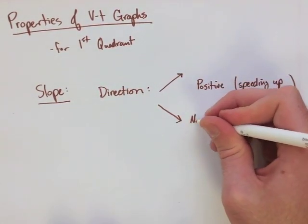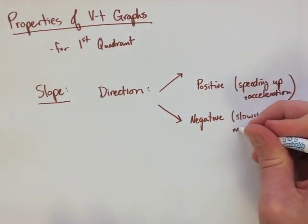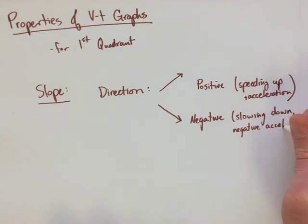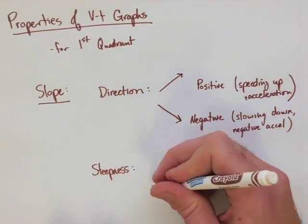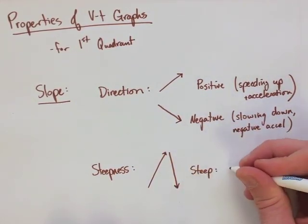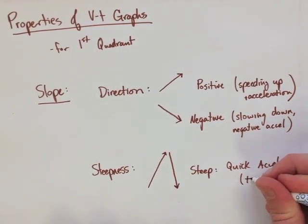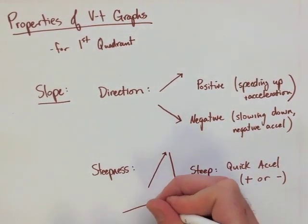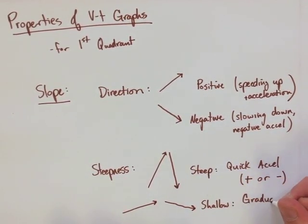If the direction of the slope is negative, that means that we're slowing down, or we have a negative acceleration. Notice we always say acceleration. Now the steepness of the graph, if it's very steep, this means that we're slowing down or speeding up very quickly. We have a quick acceleration. Now if it's very shallow, this means that we have an acceleration, but it's very gradual, and the acceleration can be in the positive or negative direction.